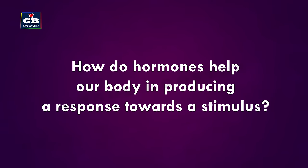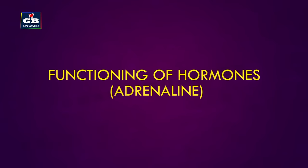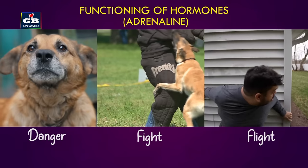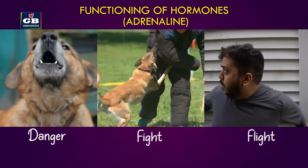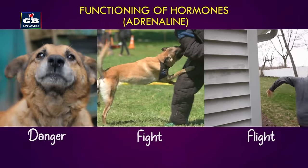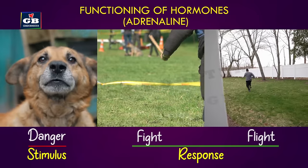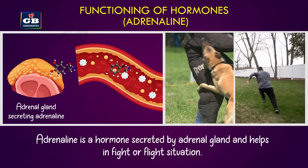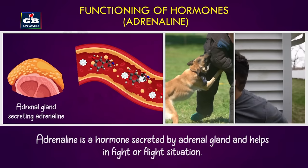To understand how hormones help produce a response to a stimulus: if a person is attacked by a dog, they must either fight or run away. The dog's attack is the stimulus; the person running or escaping is the response. In such a dangerous situation, a hormone called adrenaline is secreted by the adrenal glands, helping in the fight-or-flight response.